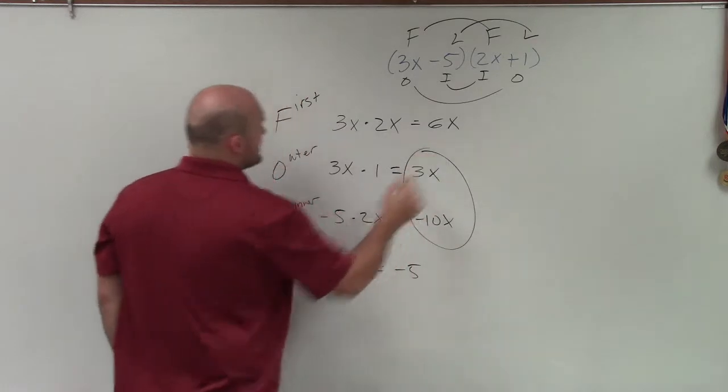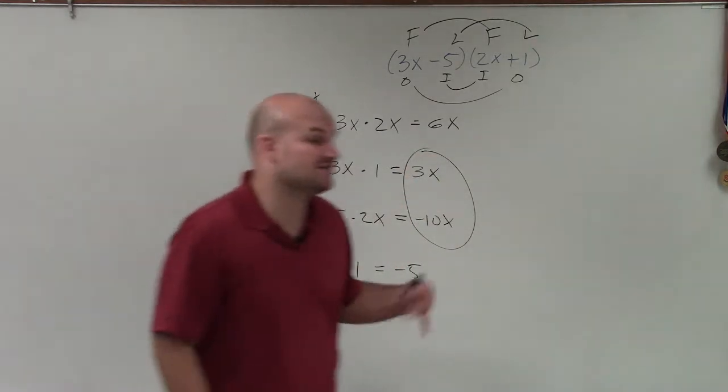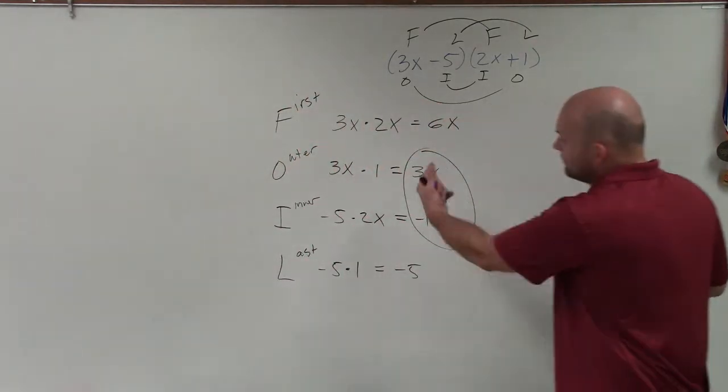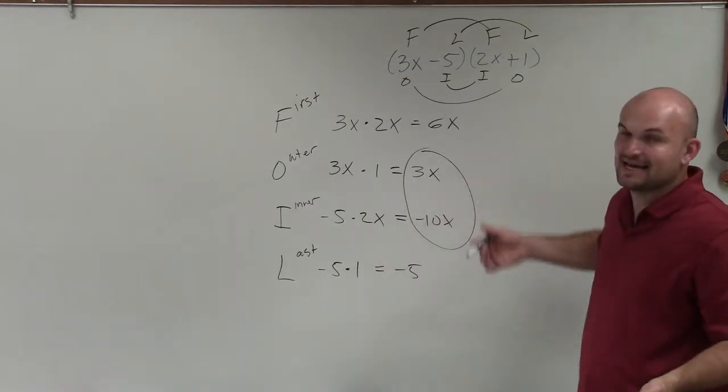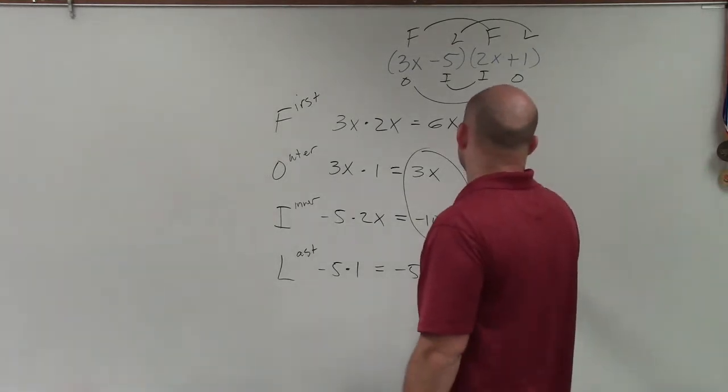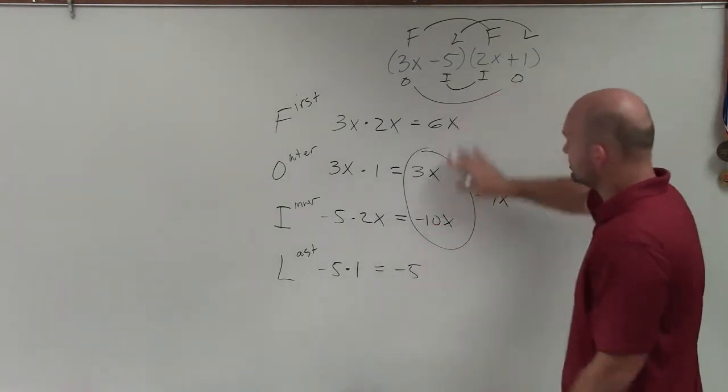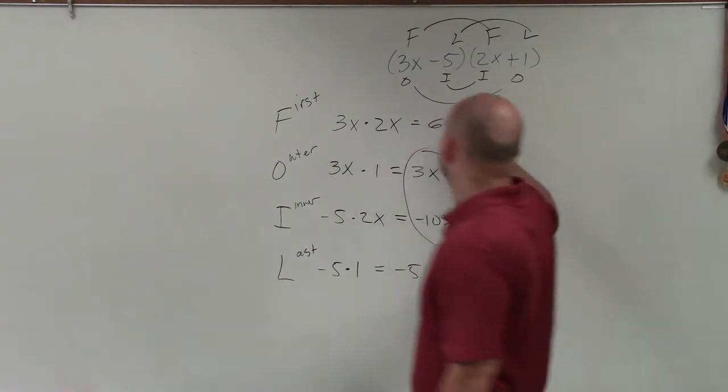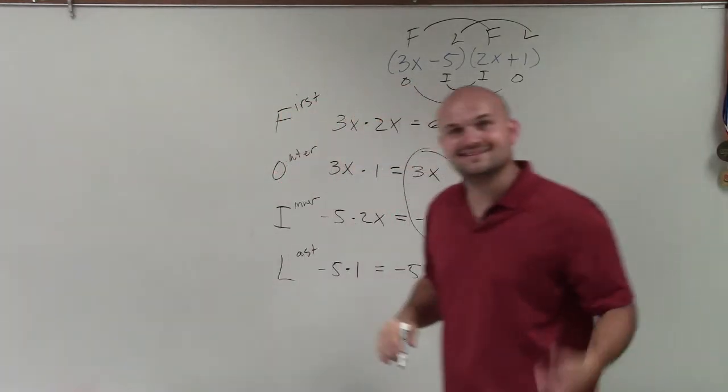Now, I notice that these two terms have the same variable factor of x. So I can combine them. 3x minus 10x is going to equal negative 7x. Now, I just, oops, I'm sorry. That's 6x squared, right? Good catch.